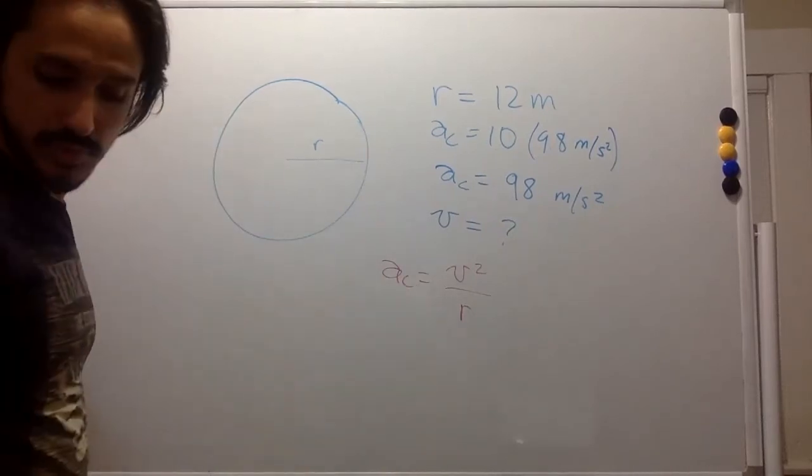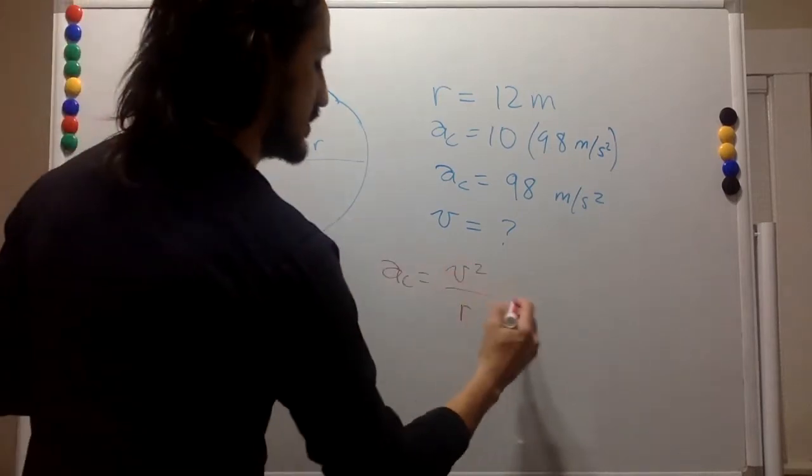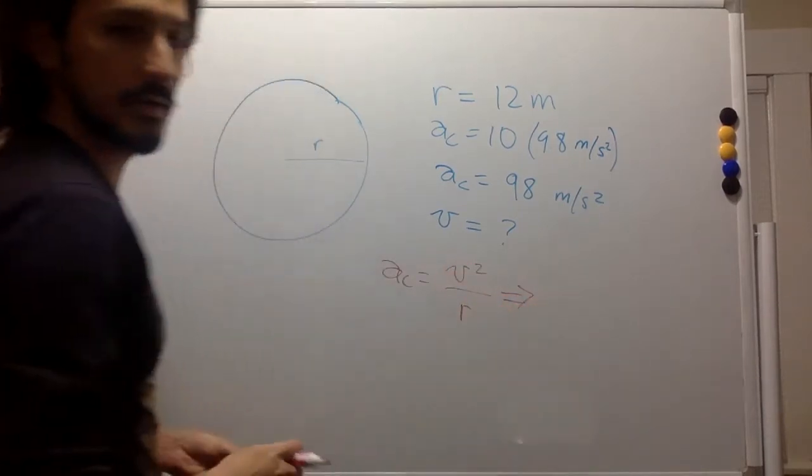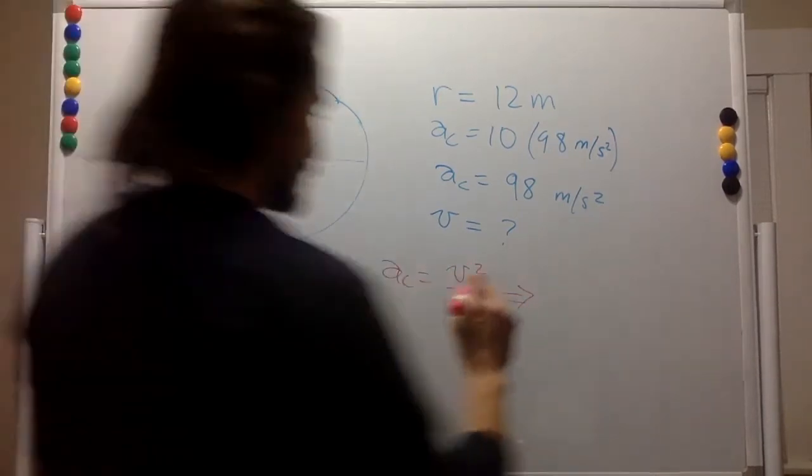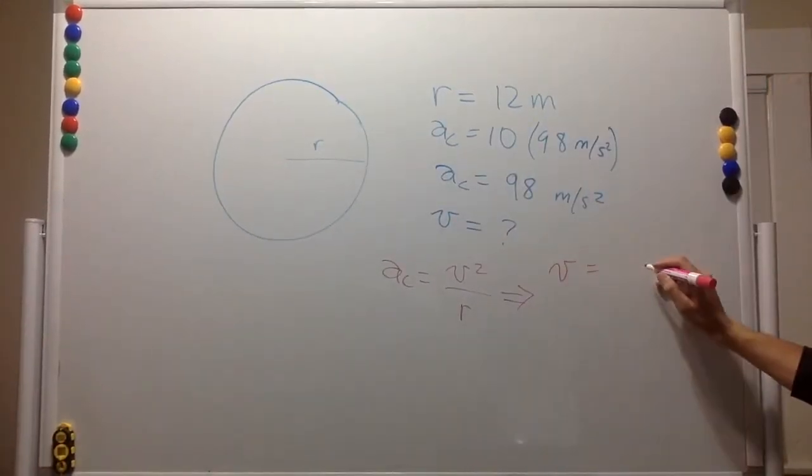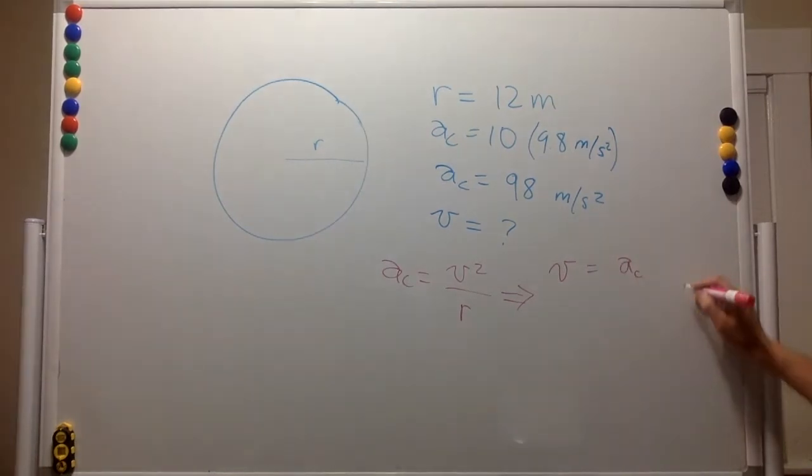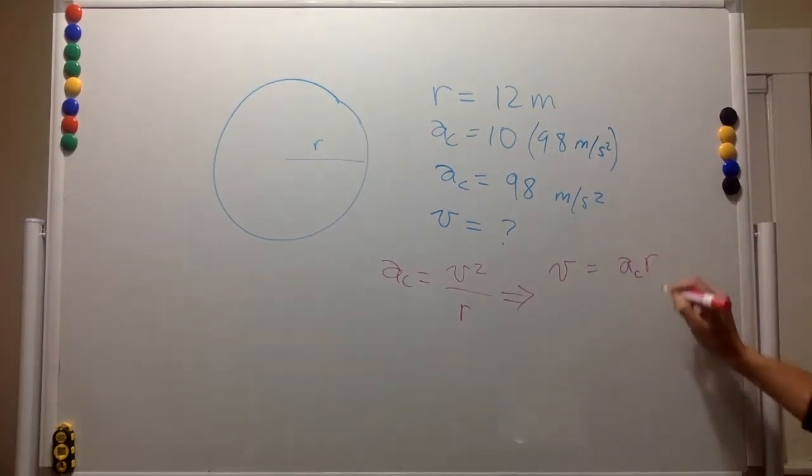So we have the same equation for the centripetal acceleration. This implies that the velocity is going to be the square root of centripetal acceleration times the radius.